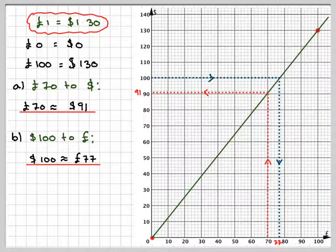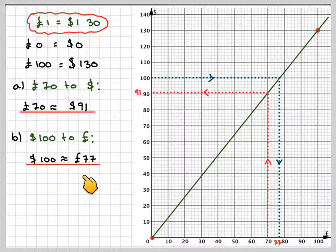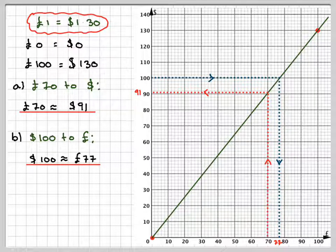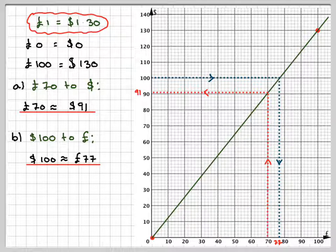We're going to get 77. So 100 dollars is approximately equal to 77 pounds. This is a conversion graph. I hope you've understood, and thank you very much for watching.